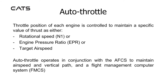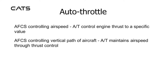Autothrottle. The throttle position of each engine is controlled to maintain a specific value of thrust as either rotational speed N1 or engine pressure ratio EPR, or target airspeed. The autothrottle operates in conjunction with the automatic flight control system to maintain airspeed and vertical path in a flight management computer system. With the AFCS controlling airspeed, the autothrottle controls engine thrust to a specific value. With the AFCS controlling vertical path, the autothrottle maintains airspeed through thrust control.